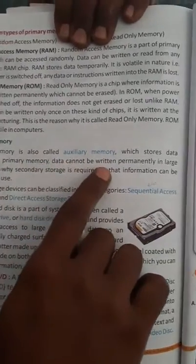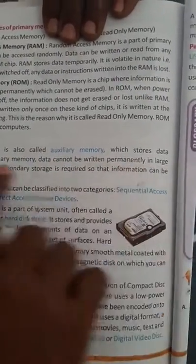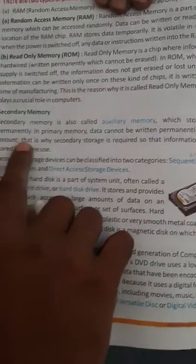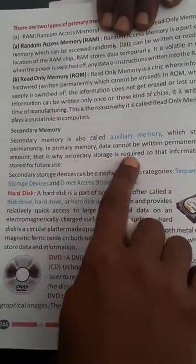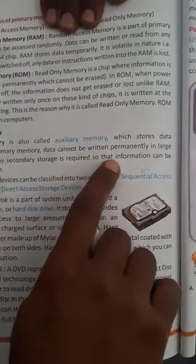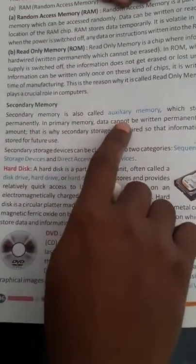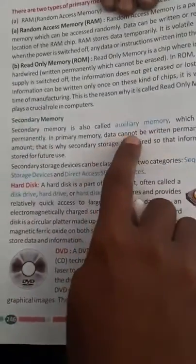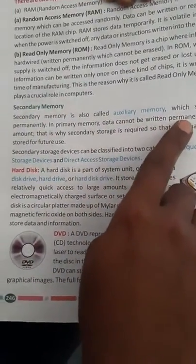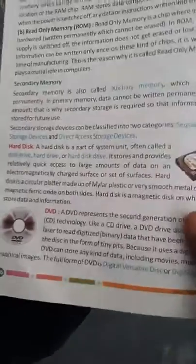In primary memory, data can be written permanently in large amounts. That is why secondary storage is required, so that information can be stored for future use. Primary memory storage is not enough, so data cannot be written permanently in large amounts. So these secondary storage are used.